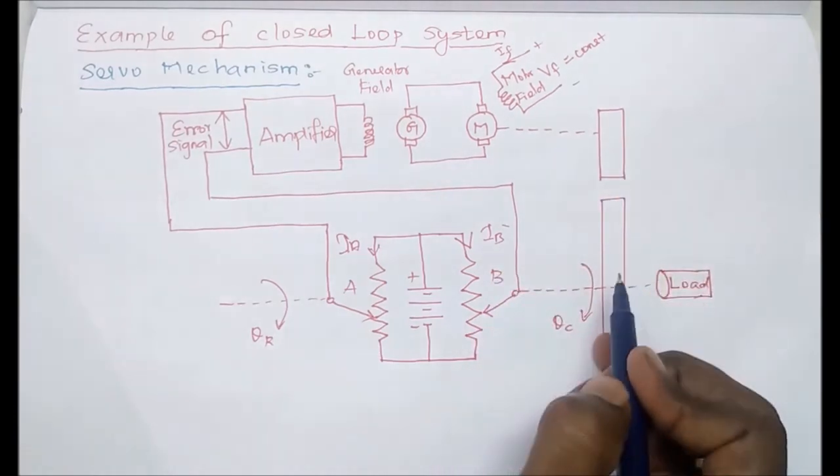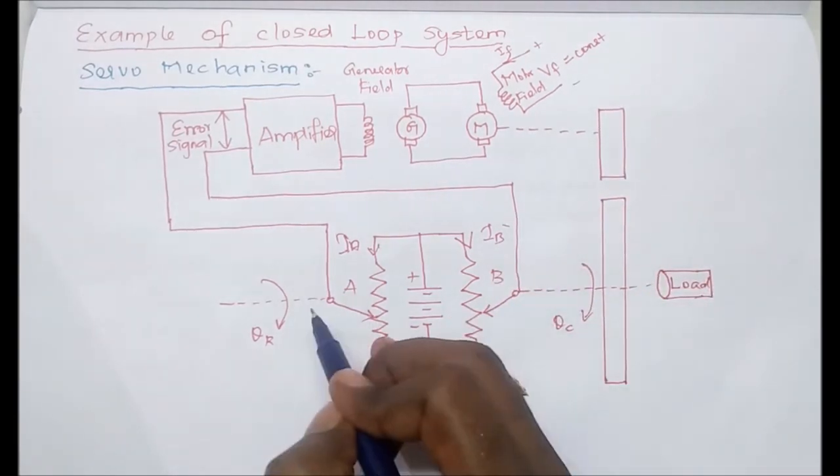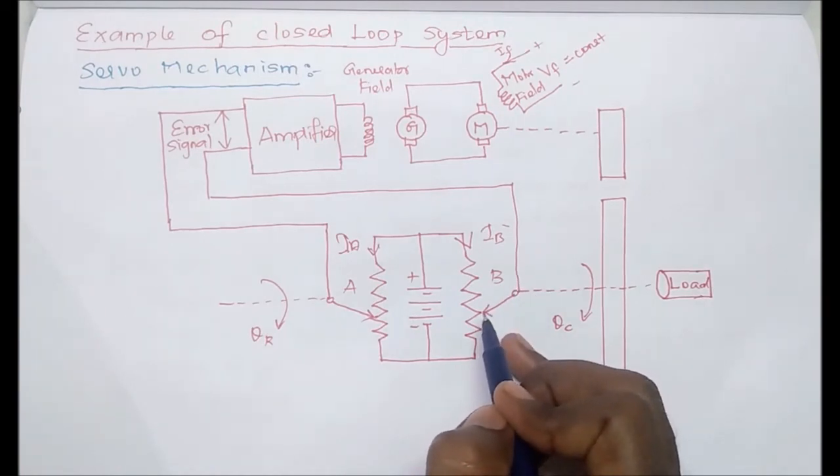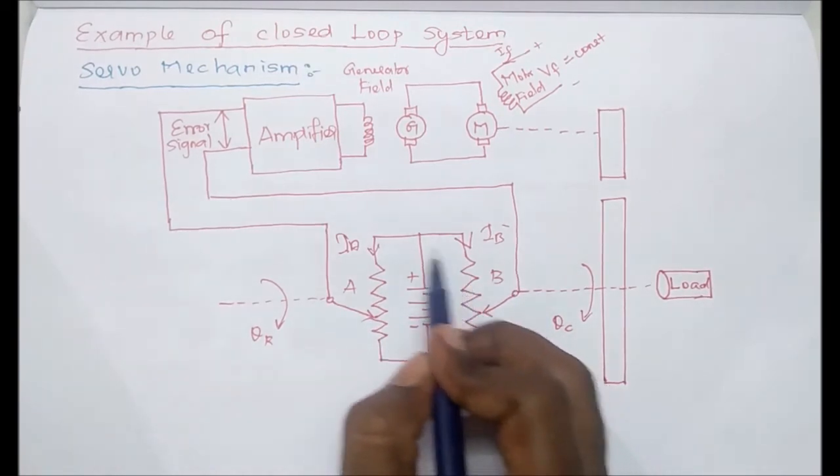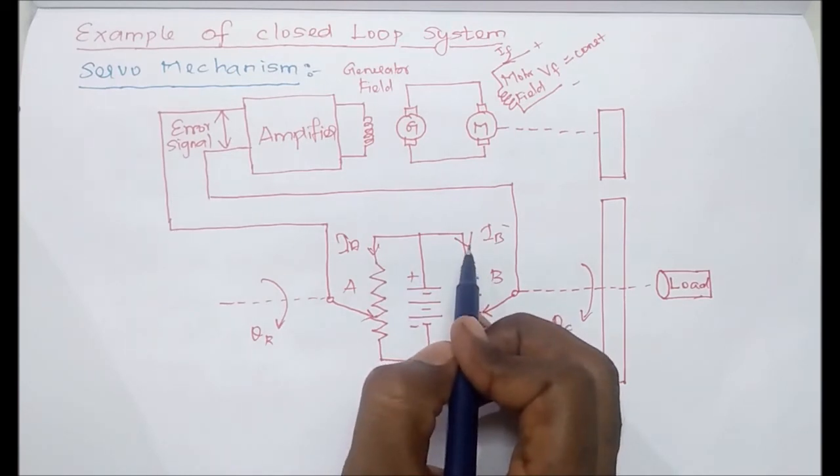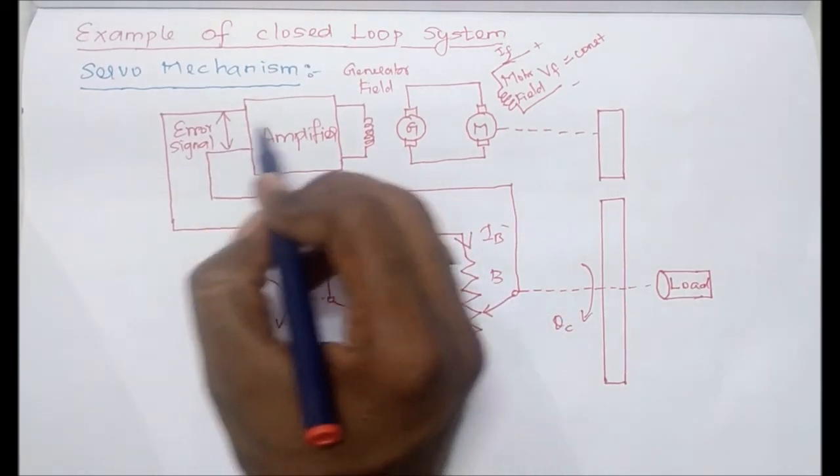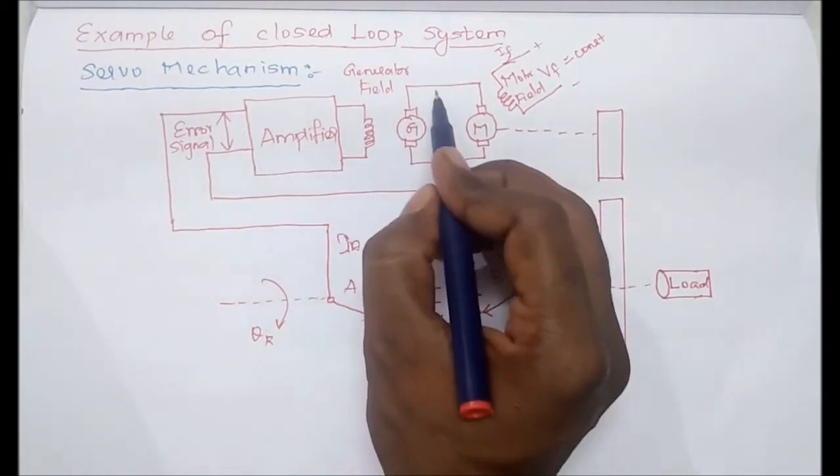When the load position reaches the reference value, this resistance value will be the same. At that time, current through both resistances is the same. Here, error is zero. If error is also zero, there is no voltage generated by the generator.